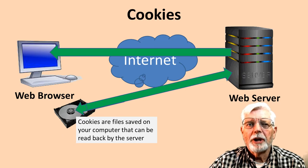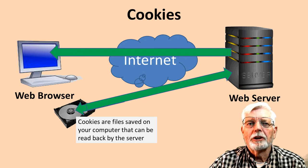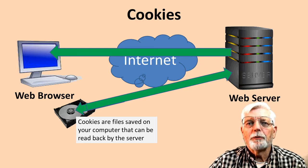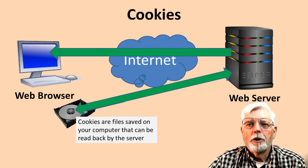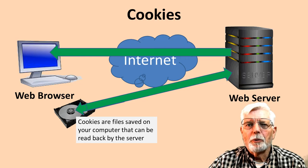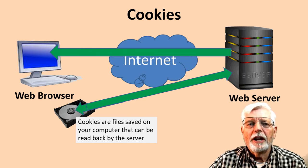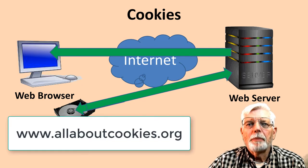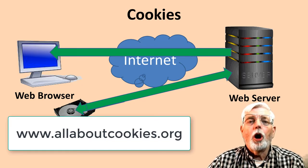Cookies are small text files a website may place on your computer or device when you visit. Cookies help the website to recognize your device the next time you visit. They serve many functions — for example, they can help a company remember your username and preferences, analyze how well sites are performing, or allow them to recommend content they believe will be most relevant to you. The majority of websites use cookies to collect and retain personal information about their visitors, such as how visitors arrived at and use a site, the device they are using, their IP address, which pages are being viewed, and their approximate physical location such as city, state, or country. Cookies can be used to monitor website performance, remember your preferences, or customize advertising campaigns based on what you have looked at before. For more information about cookies and how to manage them, visit www.allaboutcookies.org.